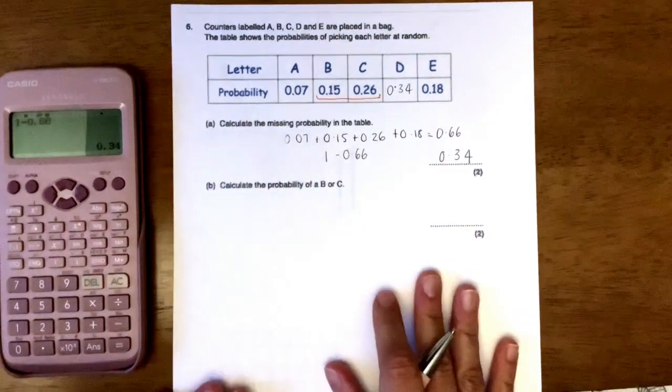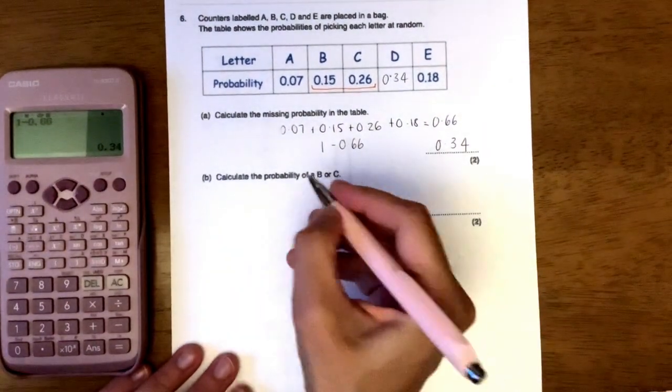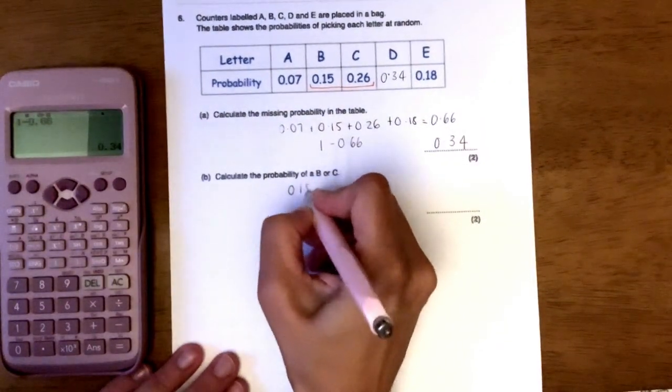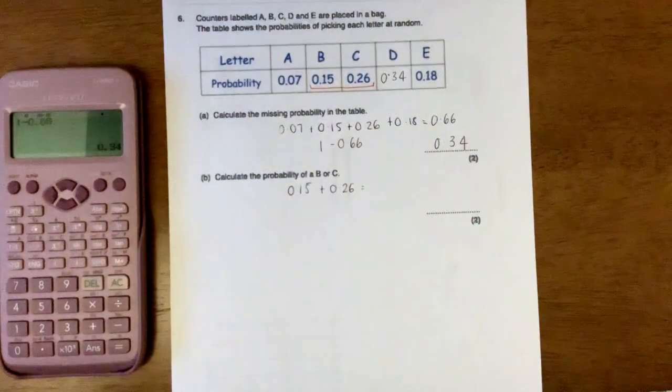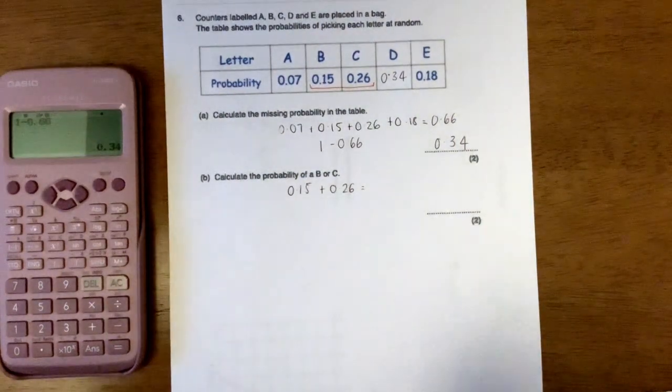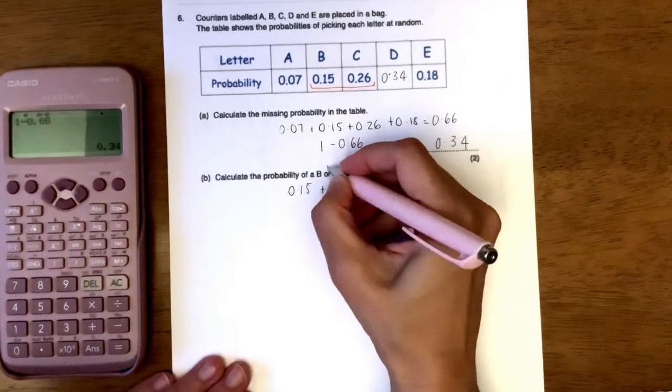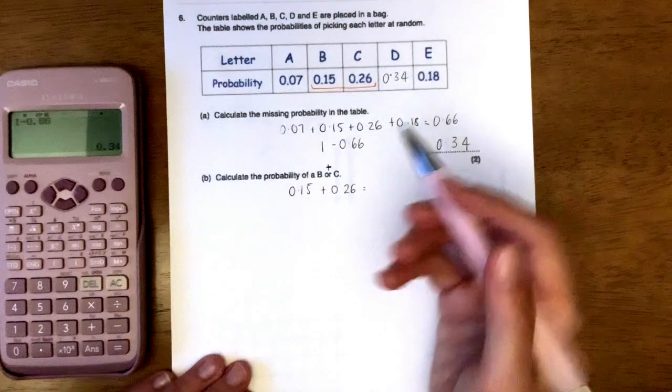So I could get either of those. What would be the probability? Well you would just add the probabilities together and that would be the probability of picking one or the other. So this word or always means to add.